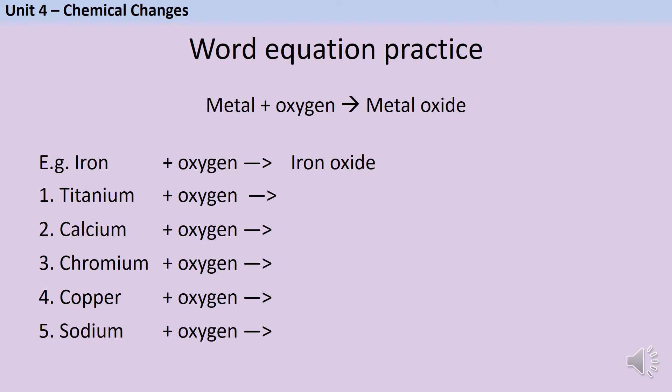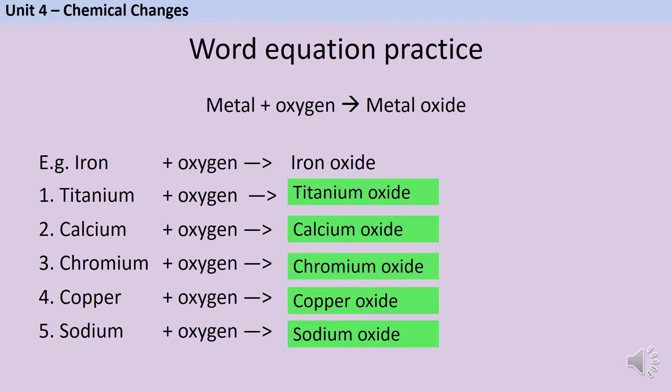Pause the video and jot down the products that are made in these five reactions. So titanium reacts with oxygen to make titanium oxide. Calcium reacts with oxygen to make calcium oxide. Chromium reacts with oxygen to make chromium oxide. Copper reacts with oxygen to make copper oxide. And sodium reacts with oxygen to make sodium oxide.